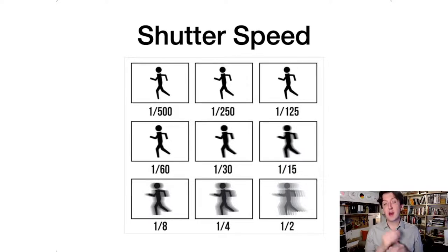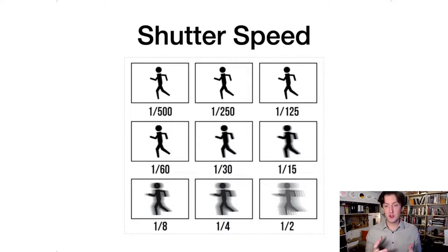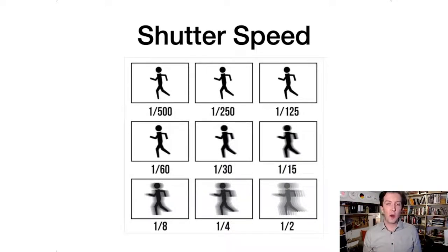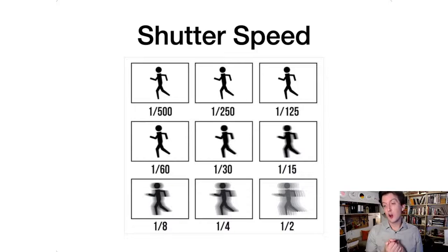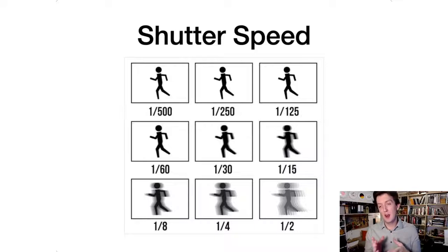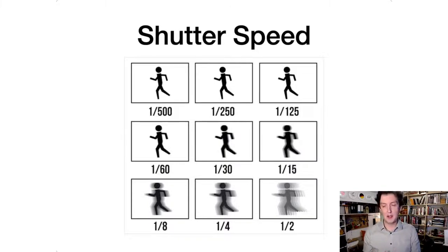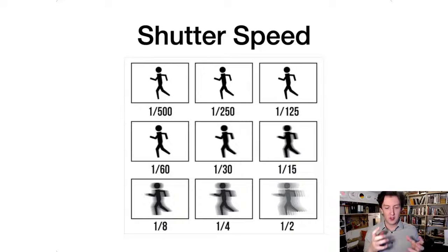Shutter speed is how long the shutter curtains expose the camera sensor to light. For every subject you shoot you'll need a different speed to freeze it — I've shot a lot of ultimate frisbee and know that 1/1000th or 1/2000th of a second is fast enough to freeze those players. For cars streaking at night I'd want anywhere from 10 to 20 seconds. As a rule of thumb, around 1/160th of a second is where you want to be for a lot of handheld shooting with a basic lens to avoid camera shake blur.